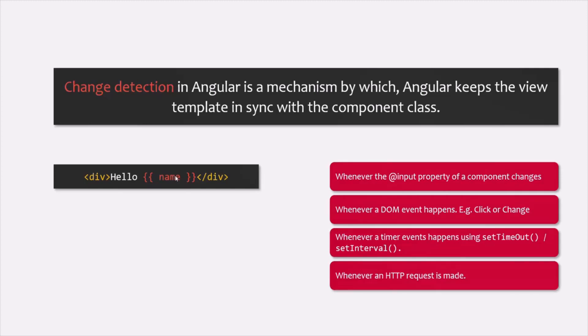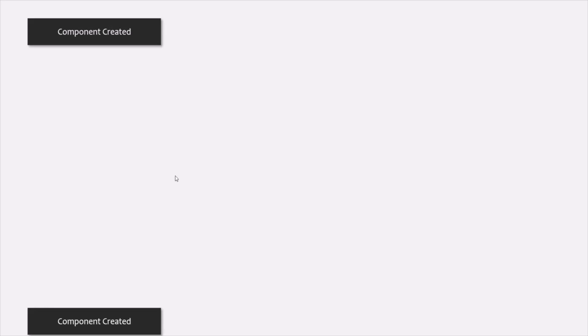Angular also raises lifecycle hooks during the critical stages of the change detection mechanism. The lifecycle of a component begins when the component class is instantiated by calling its constructor, and it ends with the destruction of the component. The constructor is neither a lifecycle hook nor specific to Angular — it is a JavaScript feature. When the constructor is called, the component's input properties are not yet updated, child components are not constructed, and projected contents are not yet available.